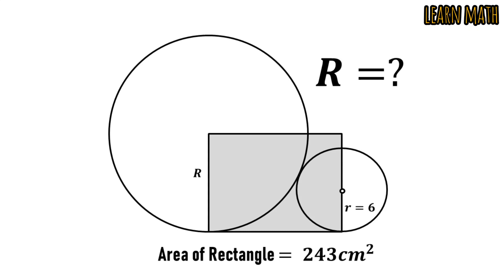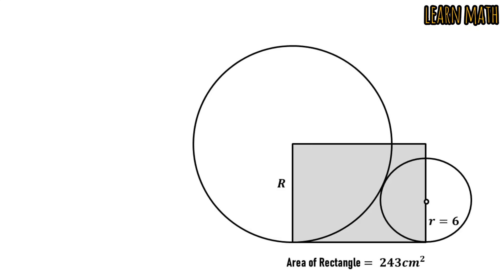The question is, there are two circles and there is a rectangle. The area of the rectangle is 243 cm². The radius of the small circle is 6. We have to find the radius of the big circle.